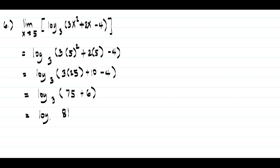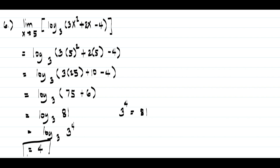We get log(75 + 6), which is log(81) to the base 3. Since our base is 3, we write 81 as 3 raised to 4. So log(3 raised to 4) to the base 3 equals 4, and this will be our answer.